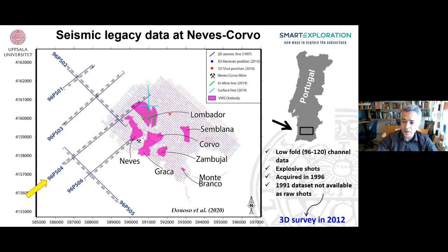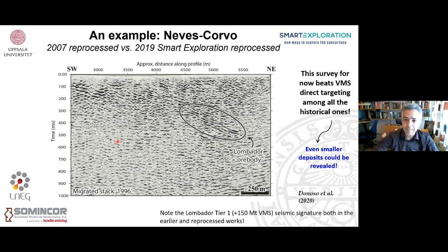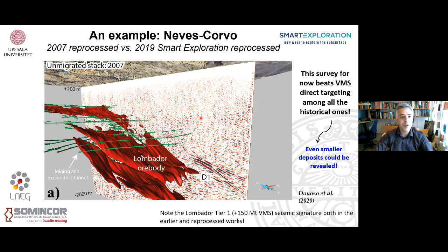And these are not the subject of my talk today, but were acquired in Smart Exploration. So we got access to a 96 data set that crosses this deposit, Lombador, tier one, if I'm not mistaken, maybe 300 million ton massive sulfide. It's really a big deposit in the Iberian pyrite belt. The data set is pretty low fold, maybe high fold, but for the time it was acquired. Unfortunately, there is a 91 data set that the raw shots are not available and they actually go beyond. And a 3D seismic was acquired in 2012. So we're going to look at line four. That was the work of a PhD student of mine, Georgios Apostolopoulos.